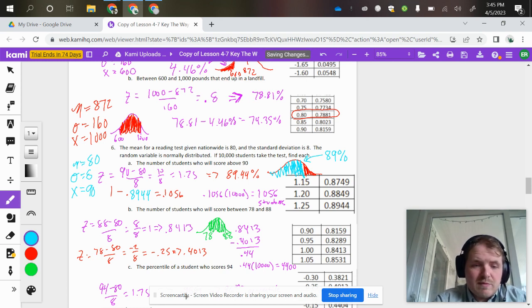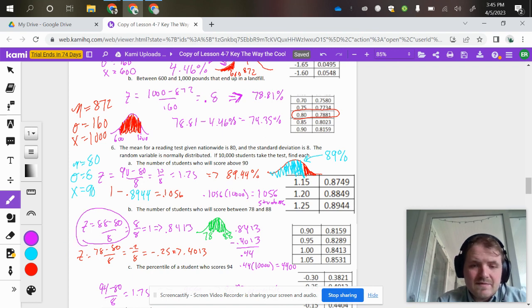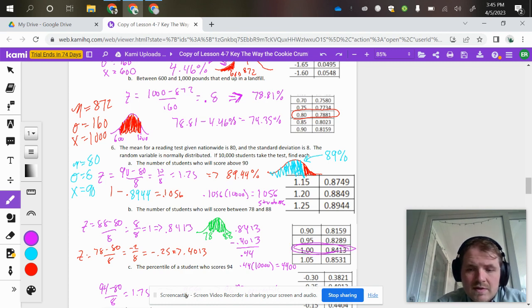So this first scenario in purple, right here, that is 88. When I go to my table, I got a z-score of 1. So that gave me a percentage of 84%, and that represents the entire area to the left of 88.